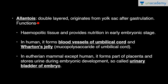Allantois is double-layered and originates from the yolk sac after gastrulation, so it also has mesoderm and endoderm layers. Functions: hemopoietic tissue and provides nutrition in early embryonic stages — same as the yolk sac. In humans it forms blood vessels of the umbilical cord and Wharton's jelly, that is the mucopolysaccharide of the umbilical cord. In eutherian mammals, except humans, it forms part of the placenta and stores urine during embryonic development, so it is called the urinary bladder of the embryo.